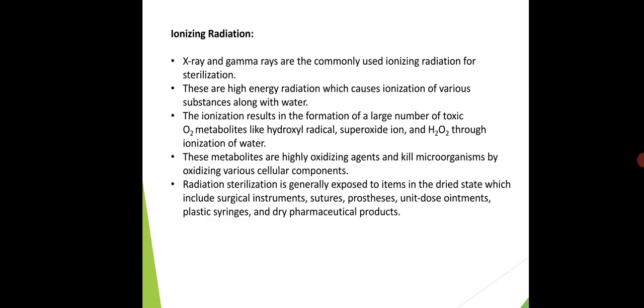These oxidizing agents can kill the microorganism by oxidizing various cellular components. An oxidizing agent has the ability to accept electrons from other substances. Halogens and oxygen are examples of oxidizing agents. The metabolites accept electrons and by doing so, they kill the microorganism and many cellular components. Radiation sterilization is used to sterilize surgical instruments, prostheses, unit dose ointments, plastic syringes, and dry pharmaceutical products.